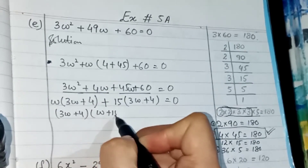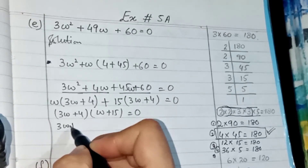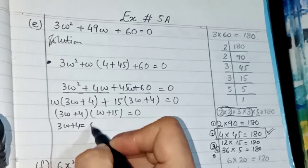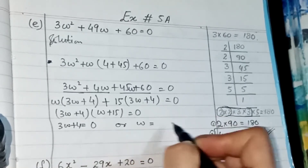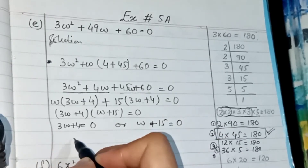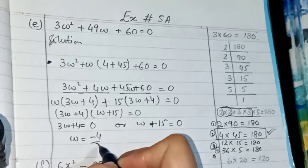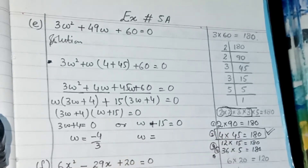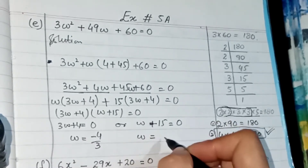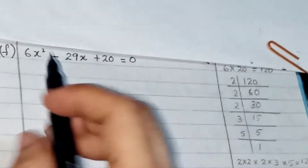So we get (3w + 4)(w + 15) = 0. Applying the zero product property: 3w + 4 = 0 gives w = −4/3, and w + 15 = 0 gives w = −15. So the answers for part E are w = −4/3 or w = −15.